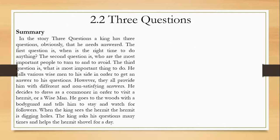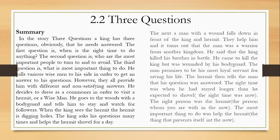Moving on with another topic — the Three Questions. The king's three questions were: what was the most important time, who were the most important people, and what was the most important occupation to do. He wanted answers from the best ones around and laid these three questions in front of his subjects. Unfortunately, no one could answer them satisfactorily, so he decided to visit a hermit who lived in a nearby forest.